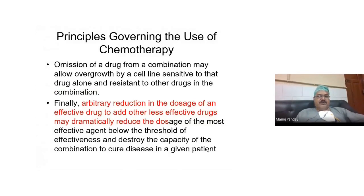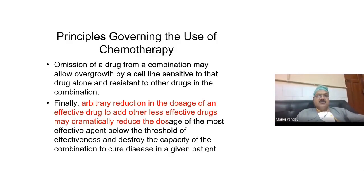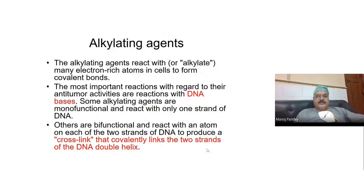If you omit a drug from a combination, the cells which were sensitive to that particular drug will overgrow, and you will then have two clones of cells — one will be killed, the other will proliferate. A tumor is a multi-clonal organ where not all cells are the same; there are multiple clones of cells within a tumor. The first class of chemotherapy discovered is the alkylating agents.